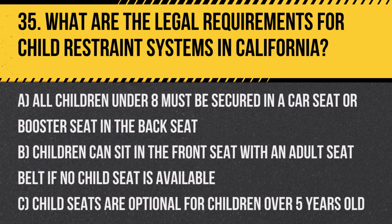Question 35: What are the legal requirements for child restraint systems in California? A. All children under 8 must be secured in a car seat or booster seat in the back seat. B. Children can sit in the front seat with an adult seat belt if no child seat is available. C. Child seats are optional for children over 5 years old. Answer: A. All children under 8 must be secured in a car seat or booster seat in the back seat. This law is designed to protect young children in the event of a crash.